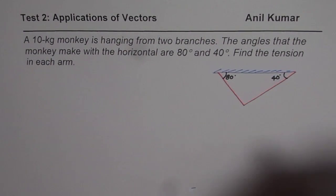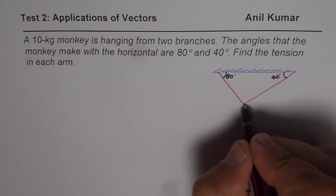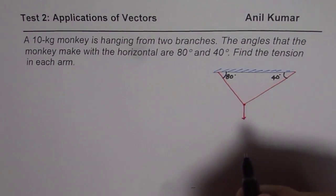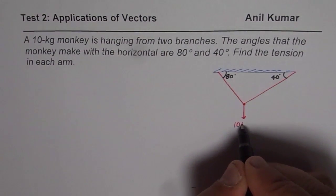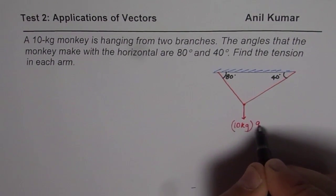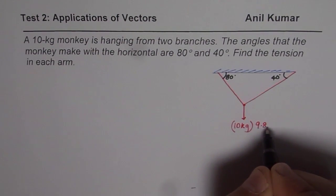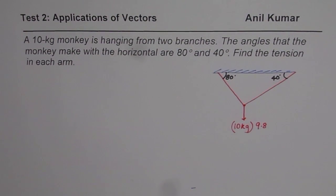Now weight of the monkey will act downwards. So we are given mass here, 10 kg. To get the weight, we need to multiply this by 9.8. Remember that part, that could be sometimes a mistake for you.